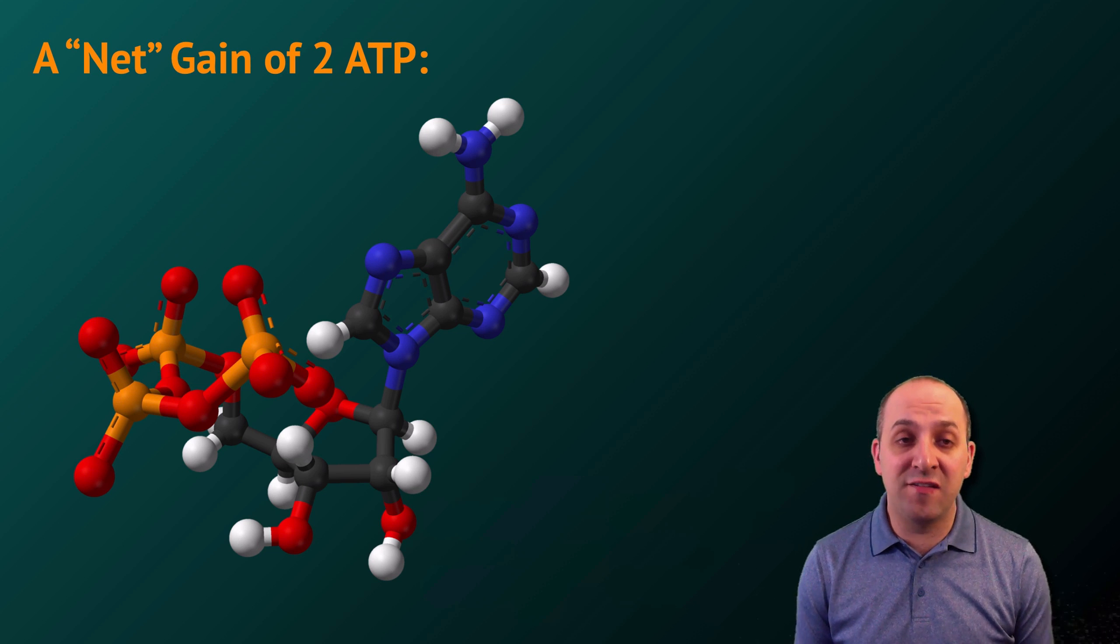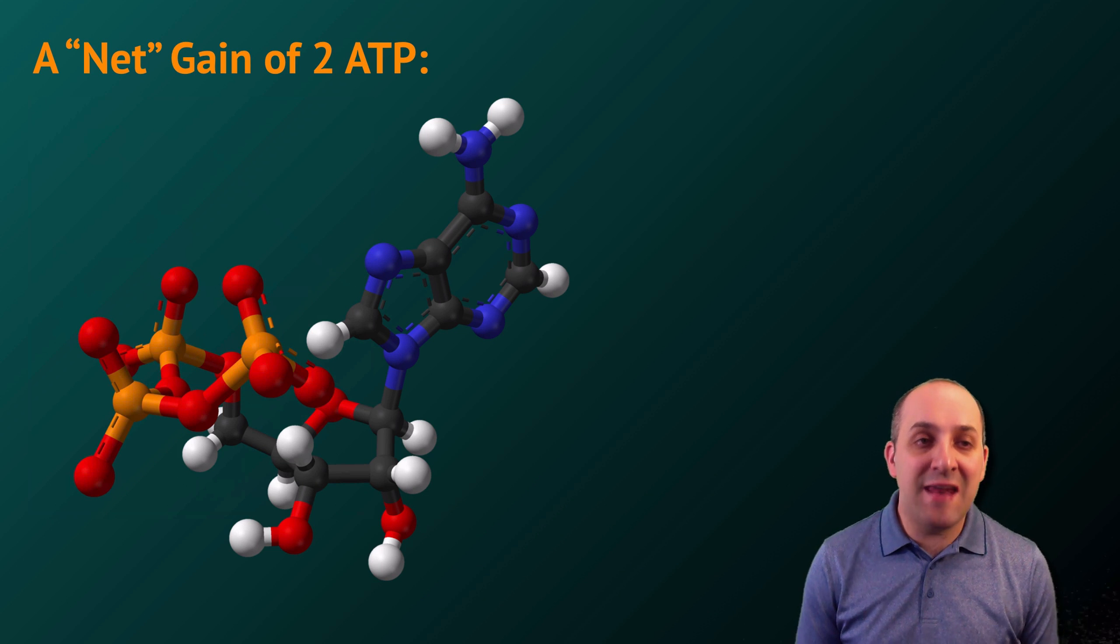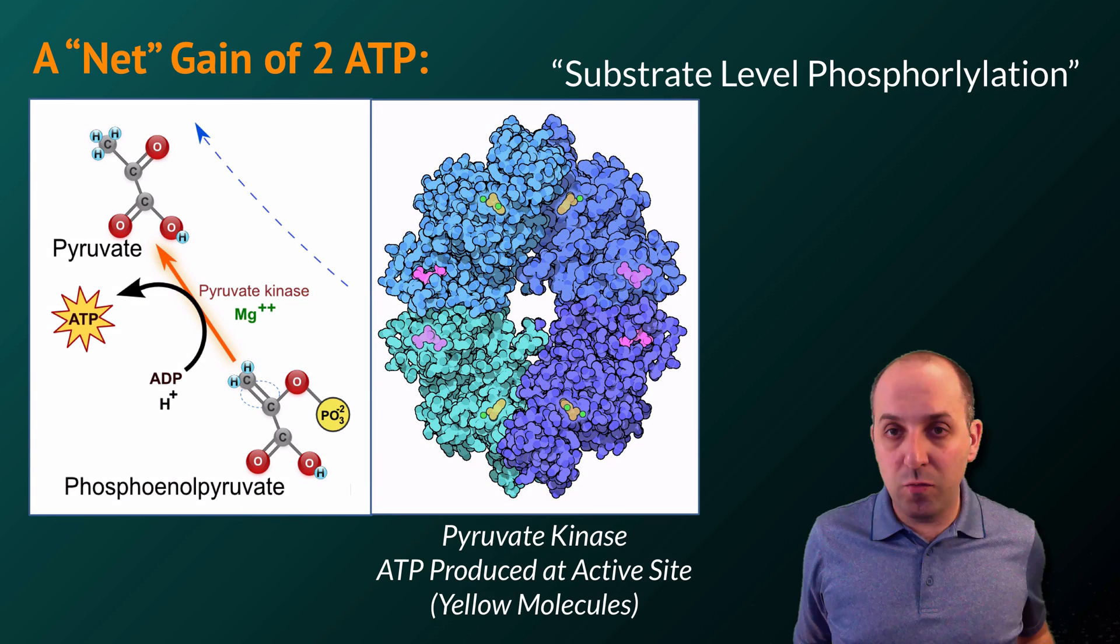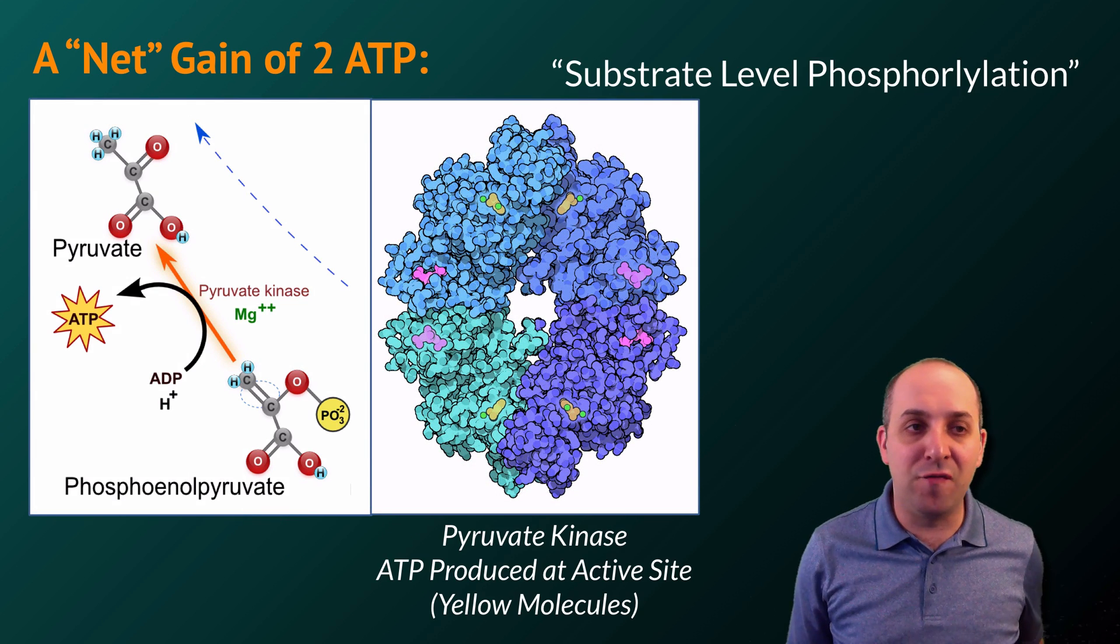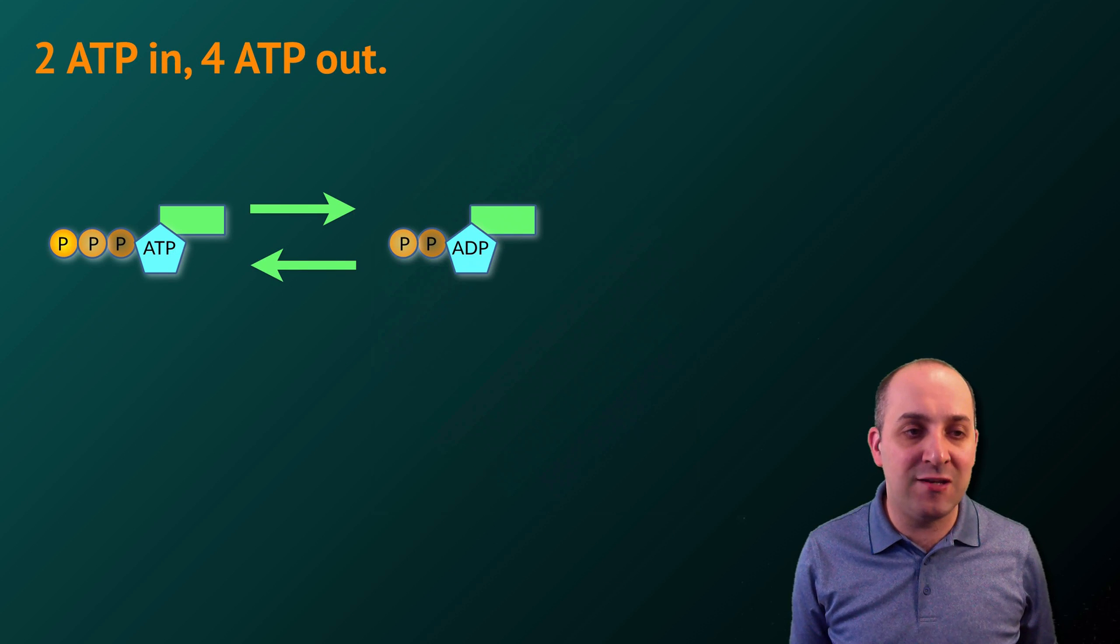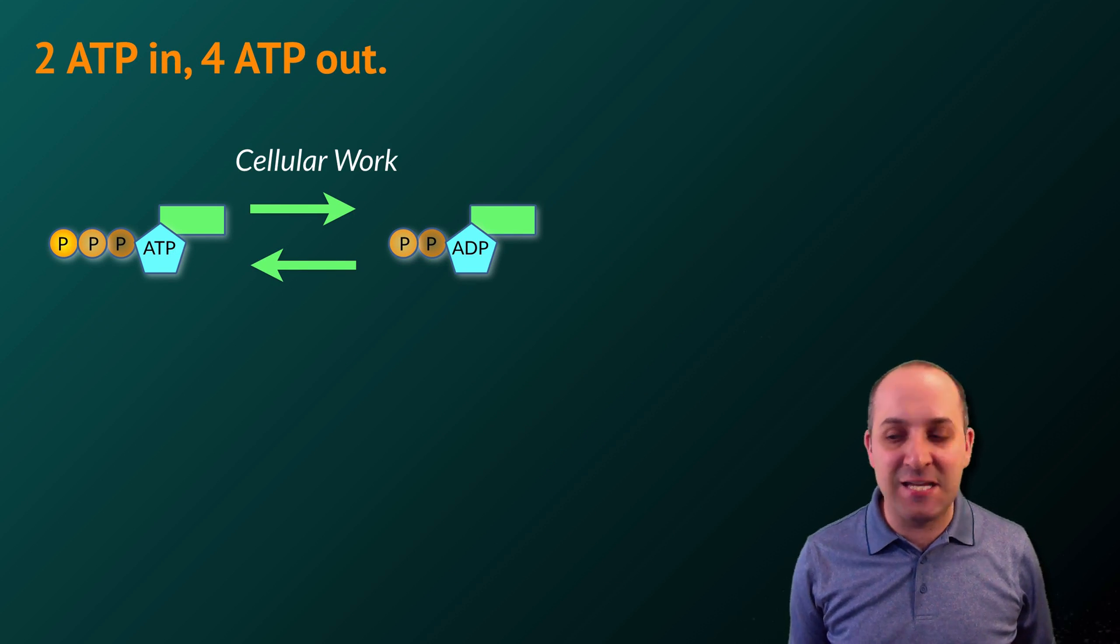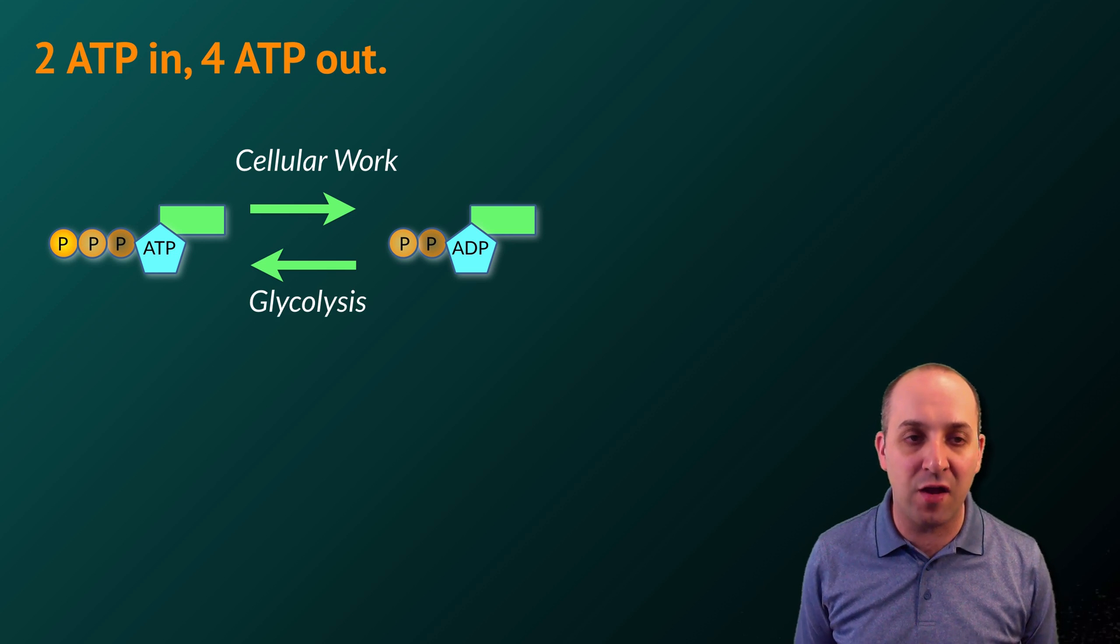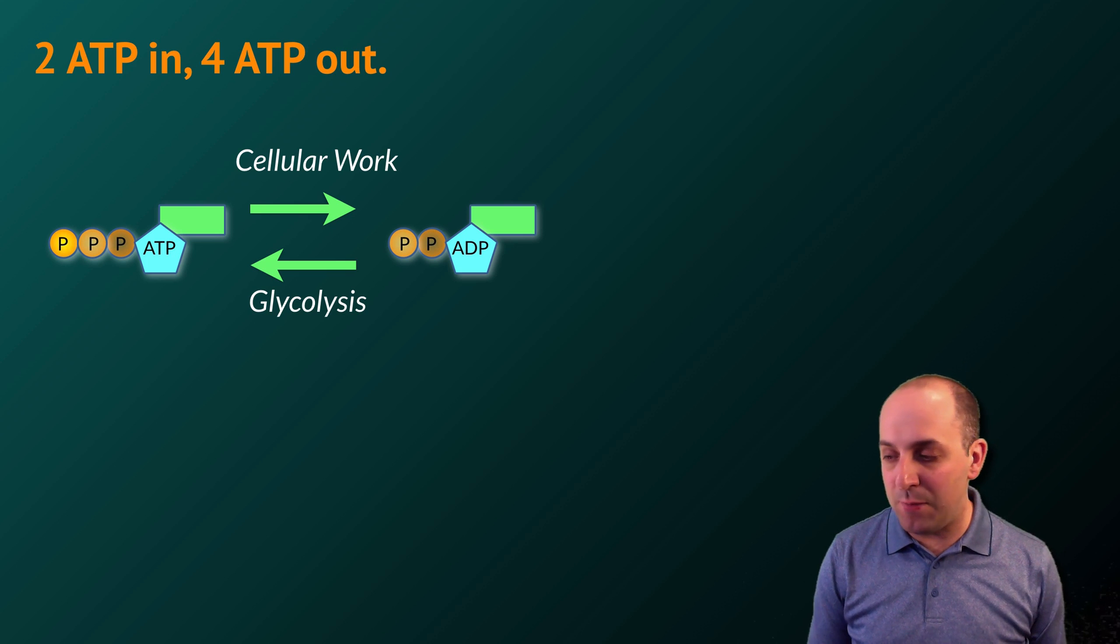For every molecule of glucose that a cell subjects to anaerobic cellular respiration, it will produce a net gain of two ATP. These ATP are produced through the action of the enzymes in this process. This is known as substrate level phosphorylation. Because we get two ATP in and we get four ATP out, this gives us enough ATP to drive cellular work as long as cells continue to carry out glycolysis.